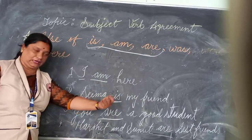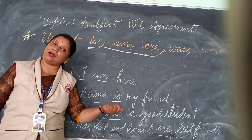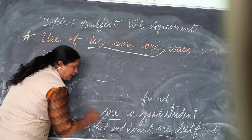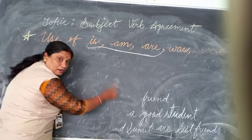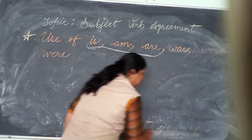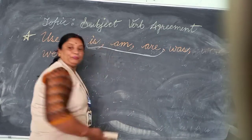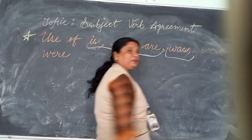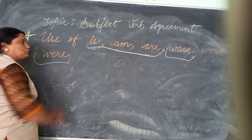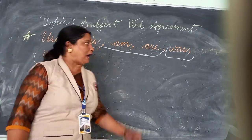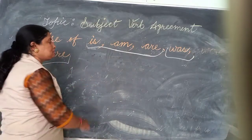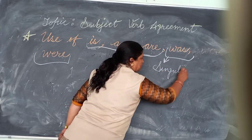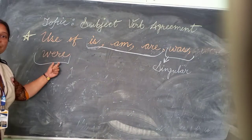With 'he' we use is. With 'they' we use are. With 'she' we use is. So this is the use of is and are. Now along with this, we will talk about was and were also. Was and were we use to indicate the past. If we talk about the past then we use was and were. We use was with singulars and were with plurals.